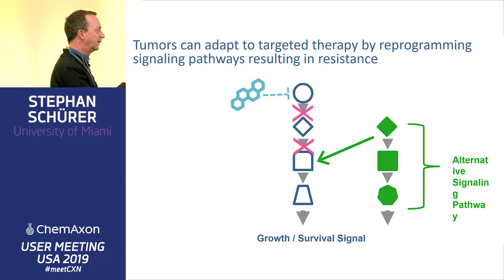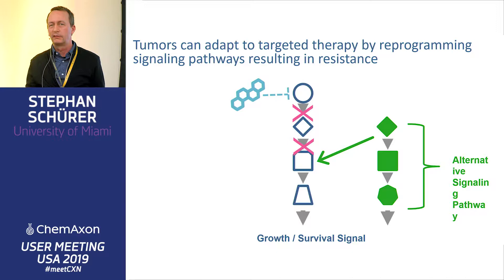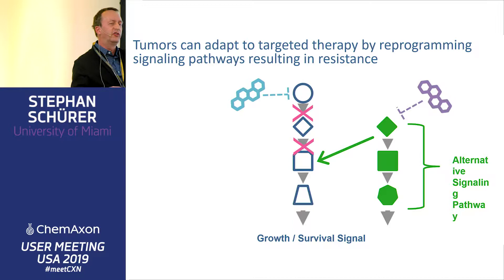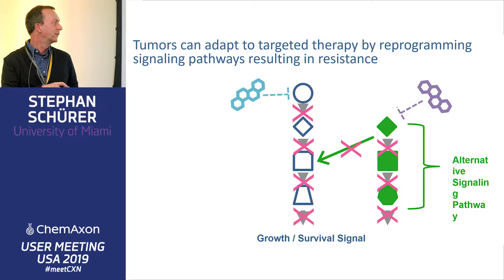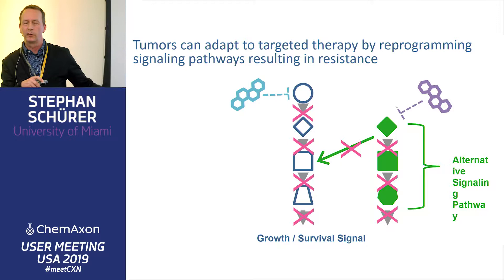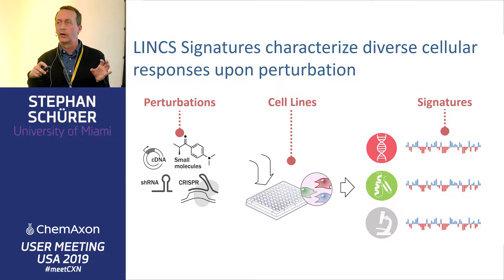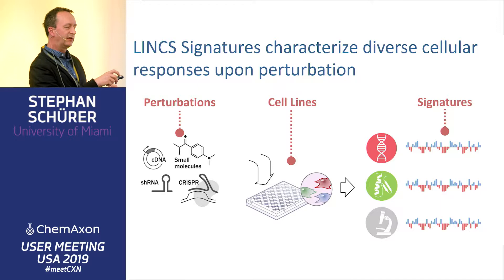This is one of the major mechanisms of resistance, particularly for heterogeneous tumors that already have cell populations and just adjust. Now if we were able to block this other pathway as well, we could probably work better. This is some of the reason why we're interested in drug combinations — how you find them systematically and in a data-driven way.